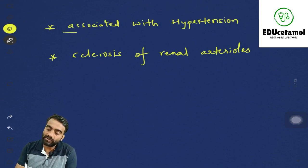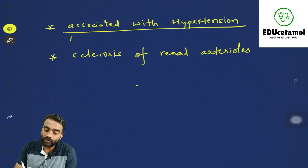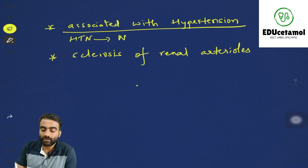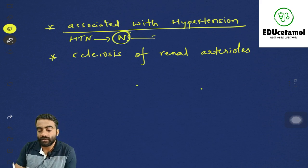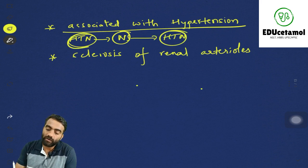Nephrosclerosis is associated with hypertension — because of hypertension there is nephrosclerosis, and because of nephrosclerosis there will be hypertension. That means hypertension can be the cause as well as the consequence of nephrosclerosis.